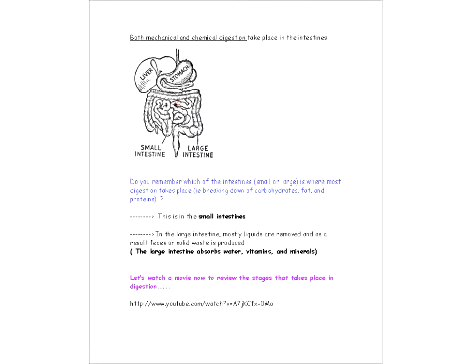Okay, so the intestines, which you can see right here, are a place where we see both mechanical and chemical digestion taking place. Do you remember which of the intestines, either the small or the large, is where most digestion takes place, which involves breaking down carbohydrates, fats, and proteins? That's in the small intestine. Now in the large intestine, mostly what's going on is the liquids are removed, and of course this produces feces in the end. Feces are solid waste. So the large intestine has the job of absorbing water, vitamins, and minerals.